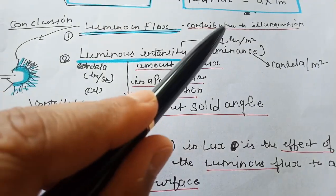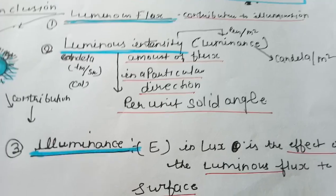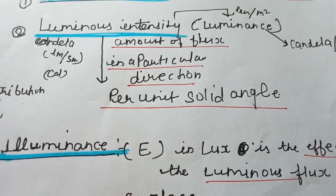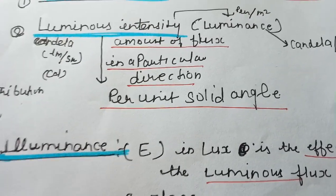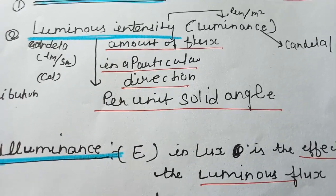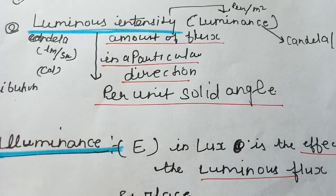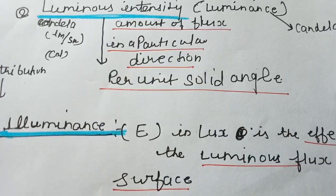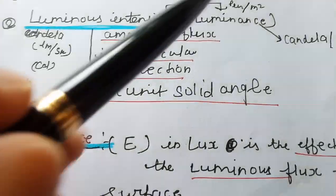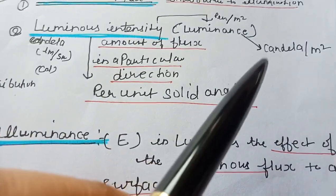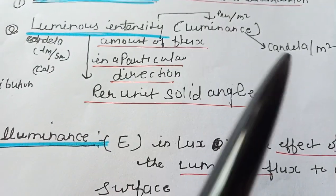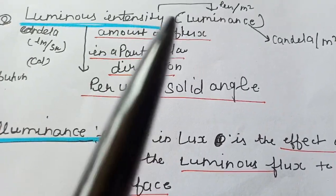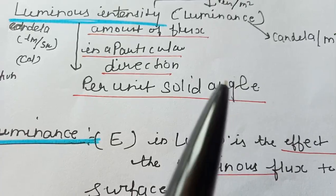To summarize the terminology: luminous flux is the contribution to illumination. Luminous intensity is the amount of flux in a particular direction per unit solid angle. It is measured in candela, which equals lumens per steradian. Luminance is different — it is measured in candela per square meter. So luminous intensity relates to per unit solid angle, while luminance relates to per square meter area.